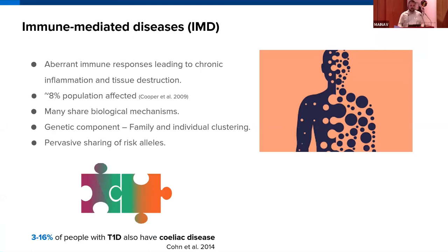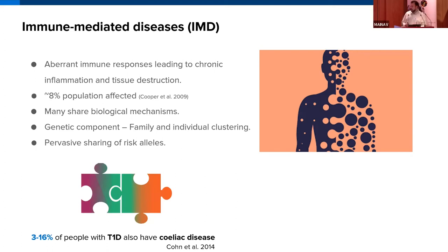Immune-mediated diseases are a set of multifactorial diseases characterized by aberrant immune responses leading to chronic inflammation and tissue destruction. They affect roughly 8% of the population worldwide, with differences between sexes and populations. Many share biological mechanisms even if they affect different tissues, and importantly, many share a genetic component — they cluster in families and can co-occur in the same individuals. For example, 3–16% of people with Type 1 Diabetes also have celiac disease.